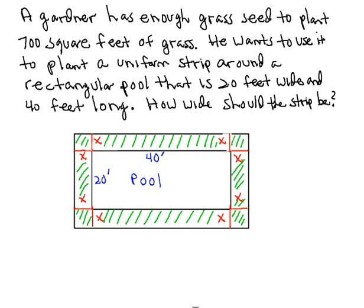We're told that a gardener has enough grass seed to plant 700 square feet of grass. He wants to use it to plant a uniform strip around a rectangular pool that's 20 feet wide and 40 feet long. And the question is, how wide should the strip be?